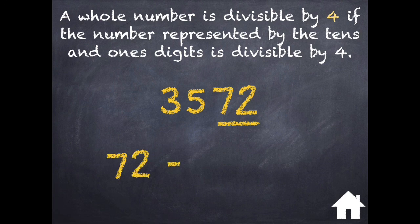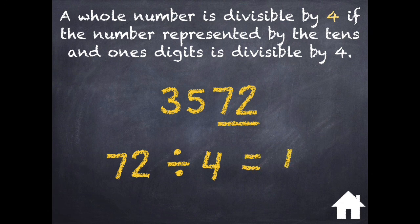I know that the last two digits, 72, are divisible by 4. 72 divided by 4 equals 18. So I know 3572 is divisible by 4.